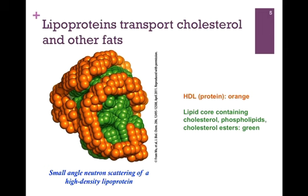Here we have an illustration of a small angle neutron scattering of a high density lipoprotein particle. Remember, this is the densest of our particles — the smallest with the highest percentage of protein. The HDL protein component is highlighted in orange, and the lipid core containing cholesterol, phospholipids, and cholesterol esters is highlighted in green. As you can see, there is a very high proportion of protein to lipid, and the protein component is on the exterior of the particle.